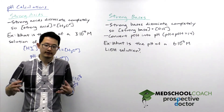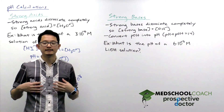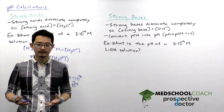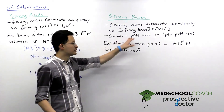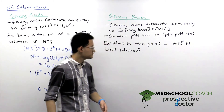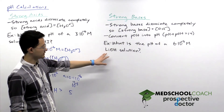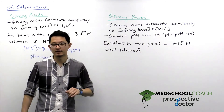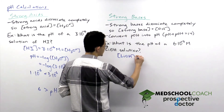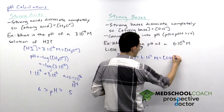Strong bases are slightly different from strong acids, but fairly similar. Strong bases dissociate completely in solution, so we can safely assume that the concentration of the strong base equals the hydroxide ion concentration. The example question is: what is the pH of a 6×10⁻² molar lithium hydroxide solution? Our assumption is that lithium hydroxide dissociates completely, so its concentration of 6×10⁻² molar is the same as the hydroxide ion concentration.